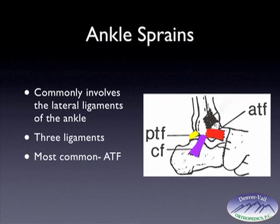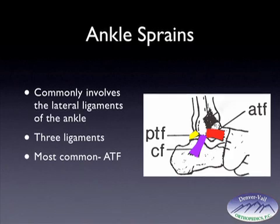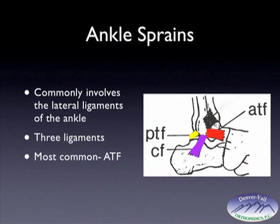When a person injures their ankle, the foot and ankle will turn in and also point down or plantarflex. As this occurs, the first ligament injured is the anterior talofibular ligament. As the foot turns in further, the calcaneal fibular ligament becomes involved. Then lastly, the posterior talofibular ligament is involved as the ankle turns in even further.